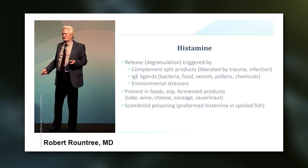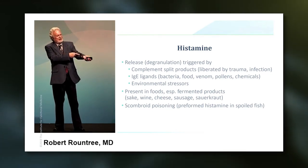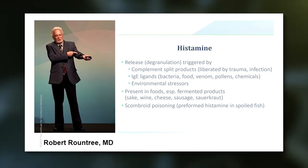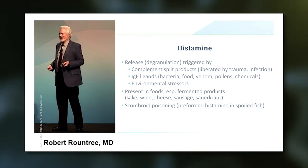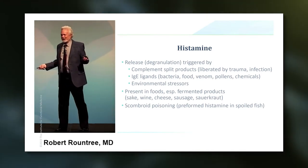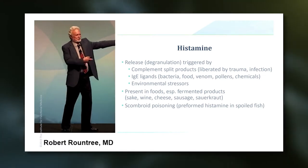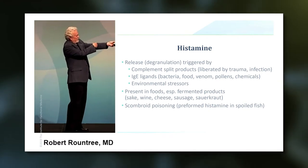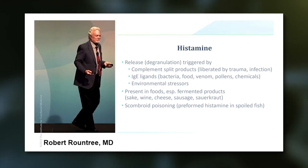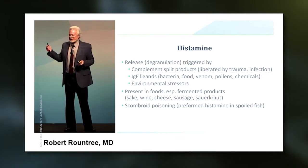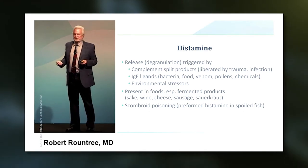There are also environmental stressors that can trigger histamine release. You probably all know someone who can write their name on their arm and get a little hive from that — it's called dermatographia. I have dermatology textbooks with a picture of somebody's forearm where they've written the word 'hives' in hives. That's histamine — a direct mechanical stimulation of the mast cell to make this happen.